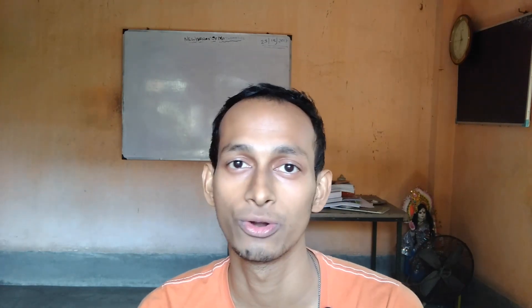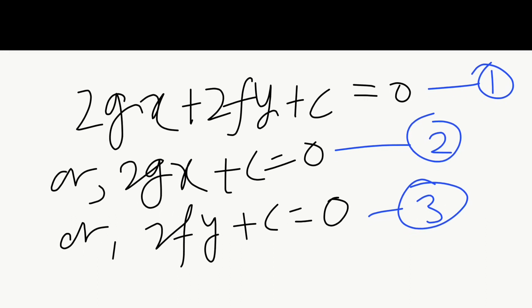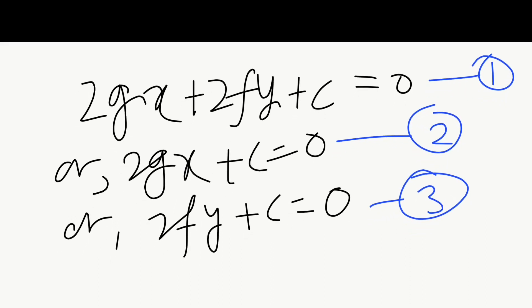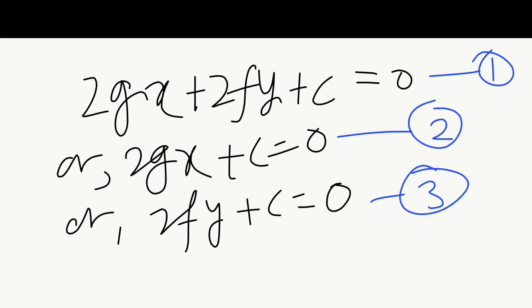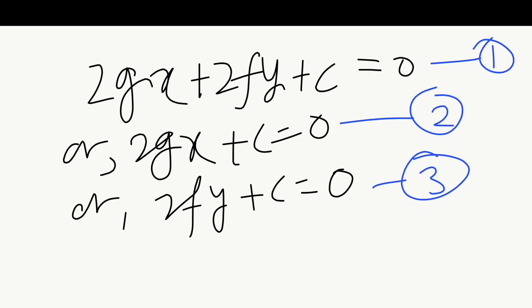When a, b, and h are 0 — that is, the x squared term, y squared term, and the xy term — meaning all the second degree terms are 0 and are absent — then it becomes the equation of a straight line.